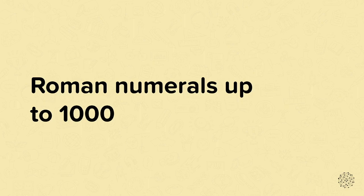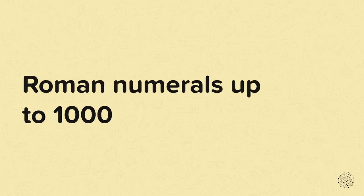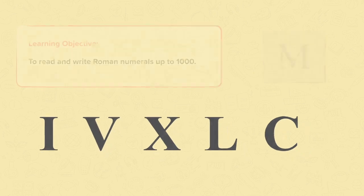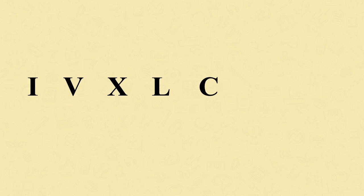Roman numerals up to a thousand. In this nugget the learning objective is to read and write Roman numerals up to a thousand. You're likely to be familiar with I, V, X, L and C, so let's go over these Roman numerals and check that we understand what they represent.